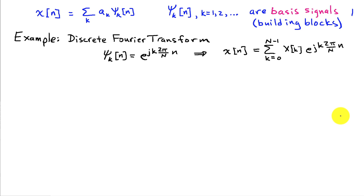A familiar example of this is the discrete Fourier transform, where we use sinusoids, psi k of n equals e to the j k 2 pi over capital N times little n. And here, capital N is the number of time samples in x. And we can write that x of n is equal to the sum from k equals 0 to N minus 1, x[k] e to the j k 2 pi over capital N times little n. So in this case, these complex sinusoids are our basis signals, our building blocks. And the coefficients associated with those, the ak in my general notation, are given by the DFT coefficients.